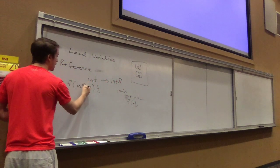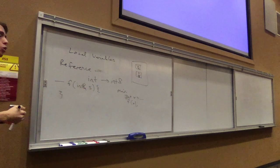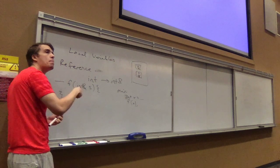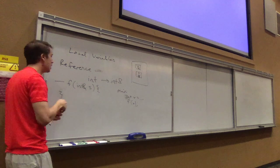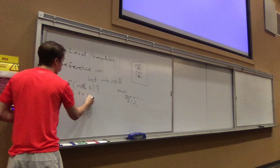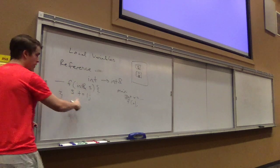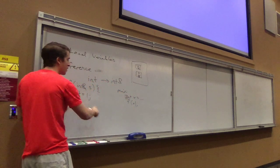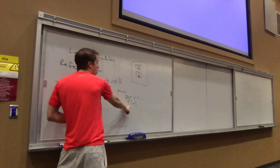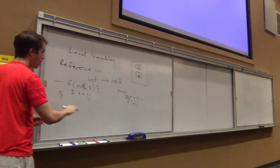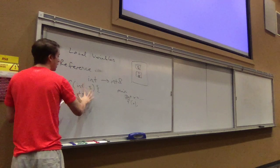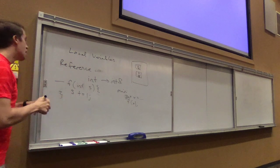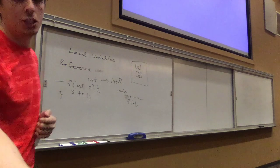But what if I instead made s a reference? Could I now modify x from f? Yeah. How are we passing data now? By reference. So if I said s plus plus, and x had the value 5 before we call f, what is the value of x after I call f? 6, because we're modifying the original. But if I instead removed the reference, what is the value of x after I call f this time? It's still 5. So knowing the difference between pass by value and pass by reference is pretty important.